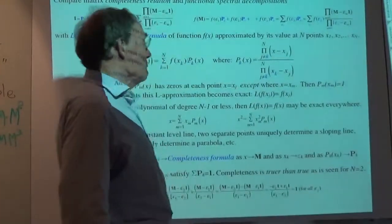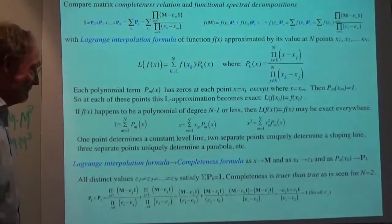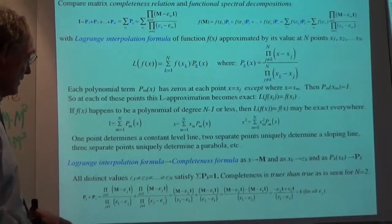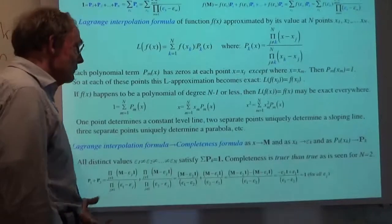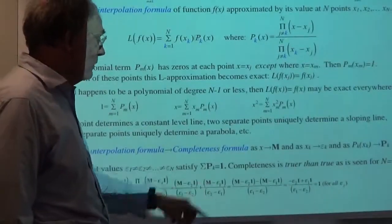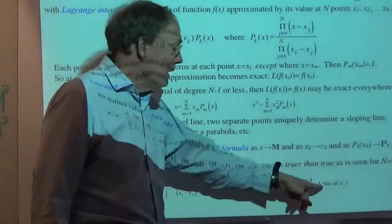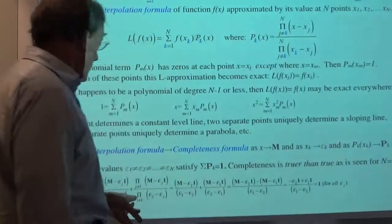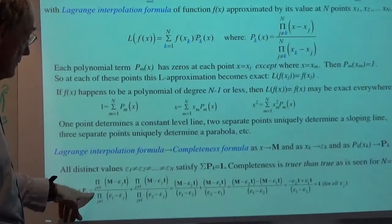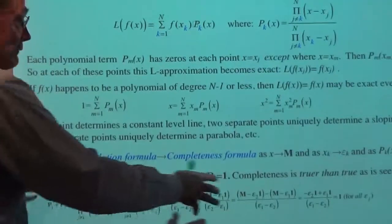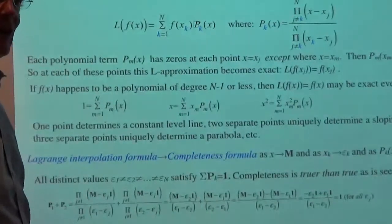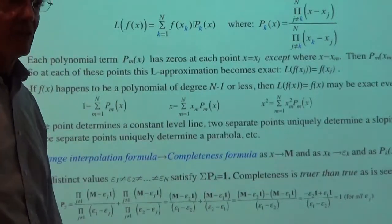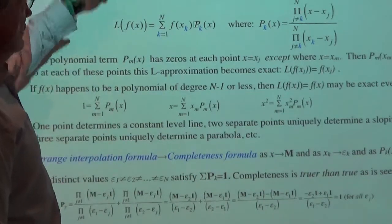P1 plus P2 is definitely true for all eigenvalues. For two eigenvalues: bingo — one. The difference in eigenvalues cancels. Prove it for three dimensions — it covers about this much space if you go through the algebra. Prove it for four — the algebra gets bigger but it still comes out the same. That's the brute force proof of our completeness relation.